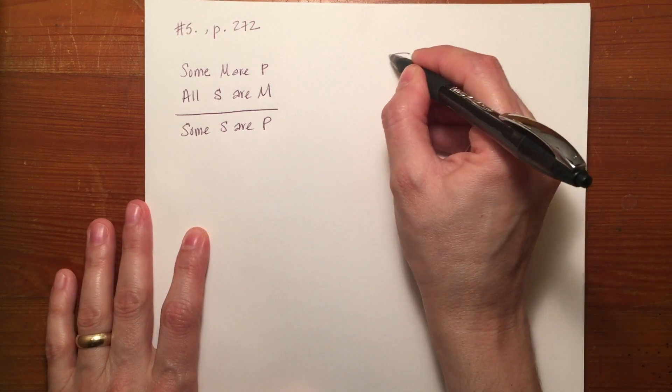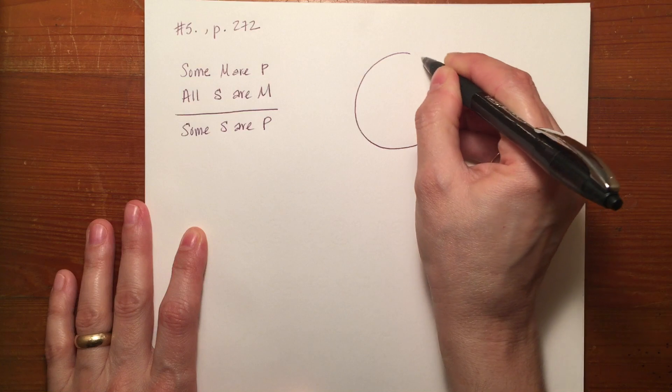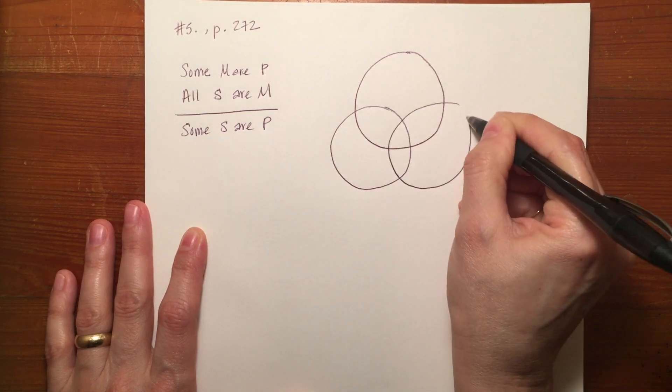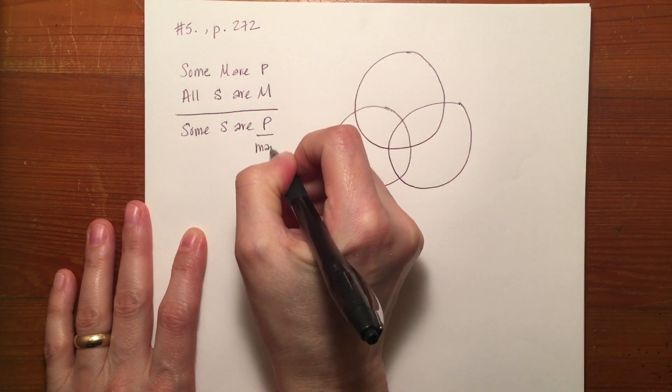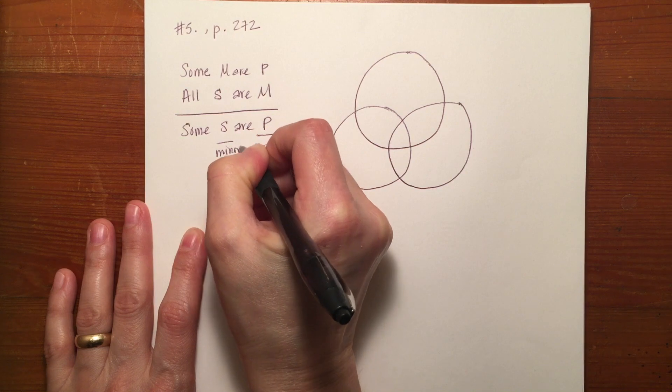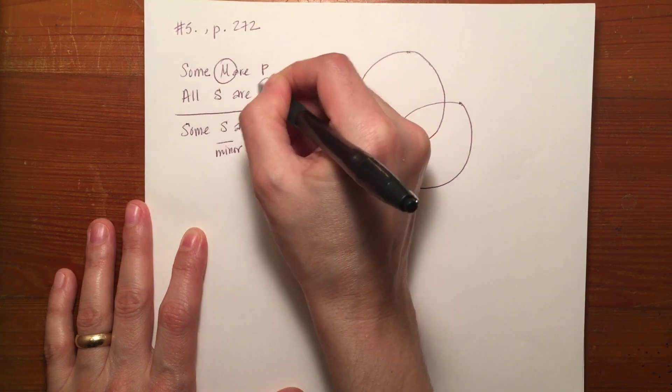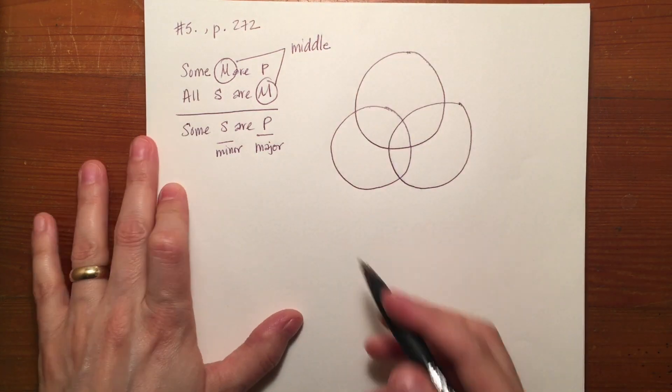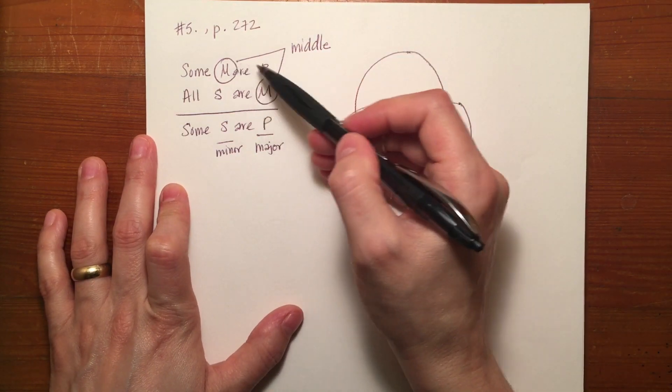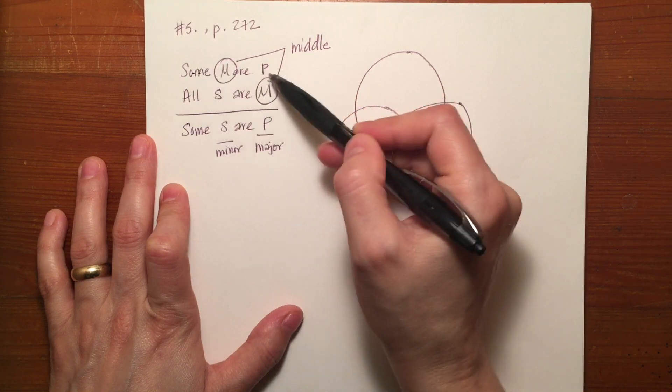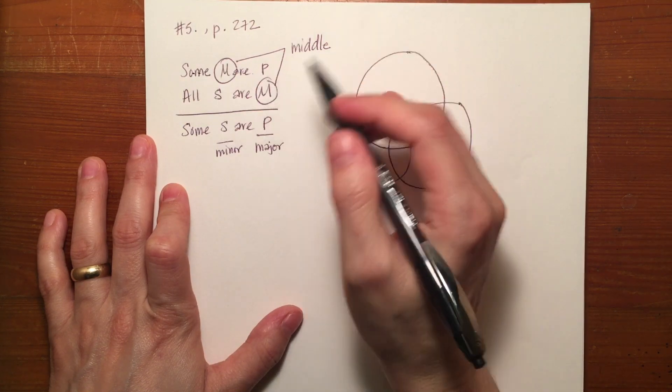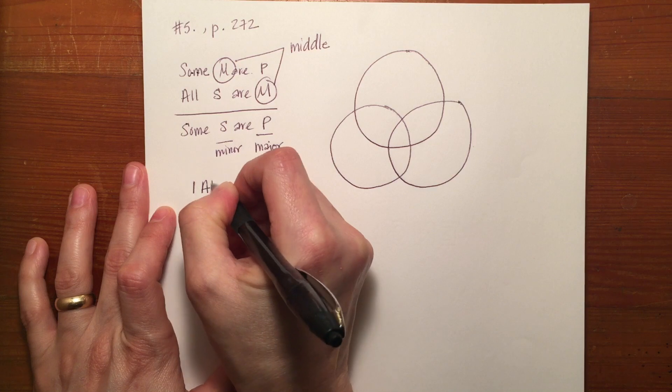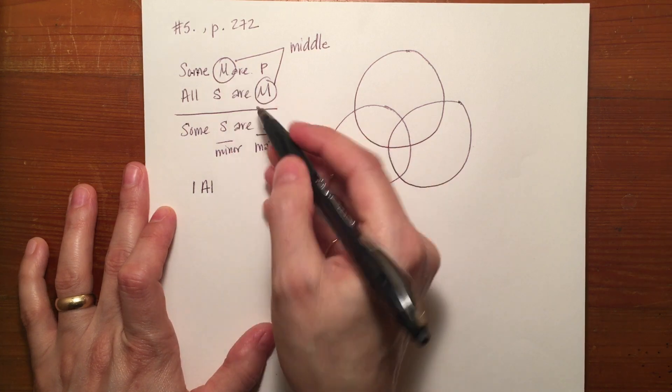Now if we create a large Venn diagram, again we want to begin by drawing our three circles, identifying our major, minor, and middle terms. Our major term P is listed in this premise and it is first from top to bottom so it's in correct standard form. So the mood would be I-A-I and the figure would be one. So we'll use that later to check our answer.